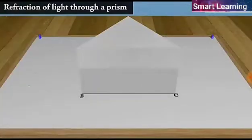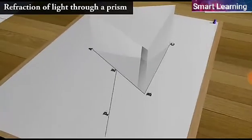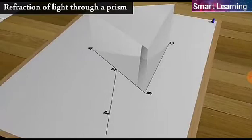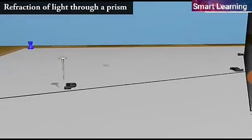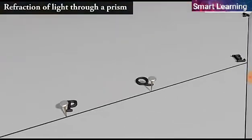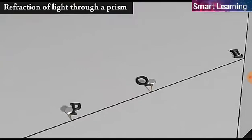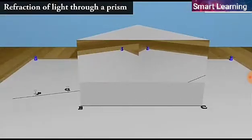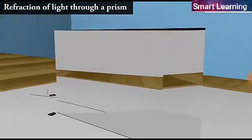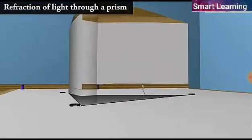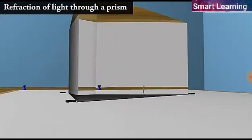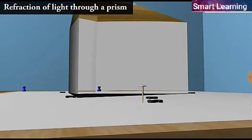Draw a straight line PE inclined to one of the refracting surfaces, say AB, of the prism. Fix two pins, say at points P and Q on the line PE as shown here. Look for the images of the pins fixed at P and Q through the other face AC. Fix two more pins at points R and S such that the pins at R and S and the images of the pins at P and Q lie on the same straight line.